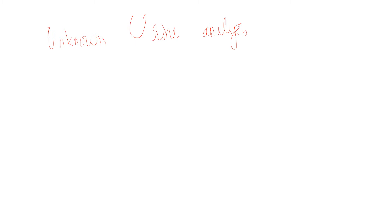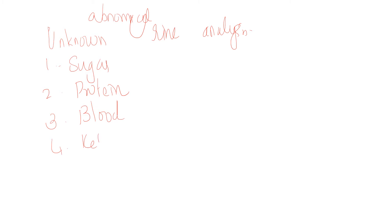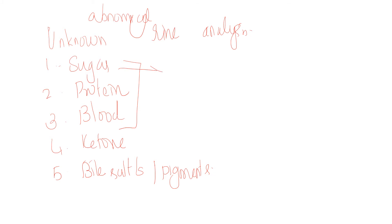For unknown urine analysis, you can expect abnormal components. Usually these include sugar, protein, blood components, ketone, and bile salts or bile pigment. For the exam, these four are commonly expected. When you go for glucose, Benedict's test will give a brick red color on heating, confirming the presence of sugar.